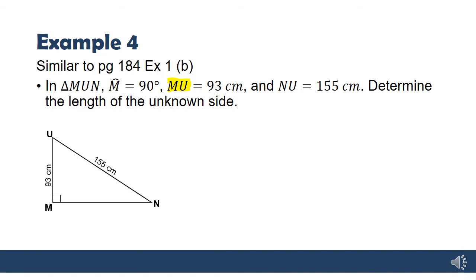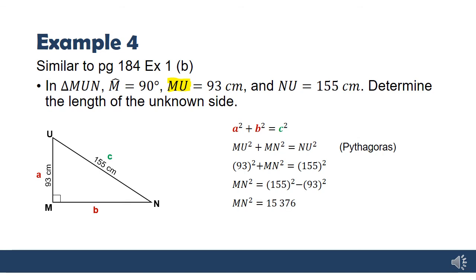Determine the length of the unknown side. Again, we're going to label our sides A, B, and C. And use the theorem of Pythagoras, like we did before. Substituting in, and we get our answer of 124 centimeters.